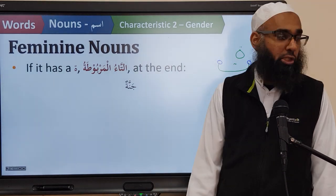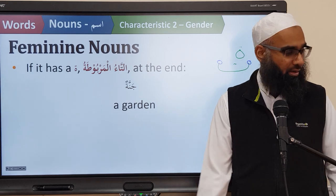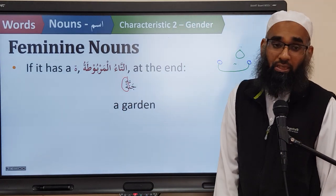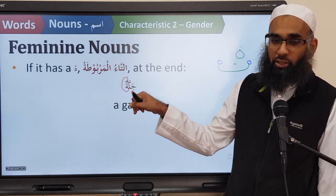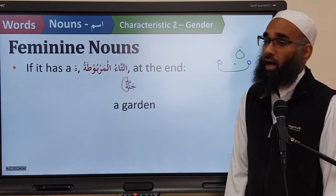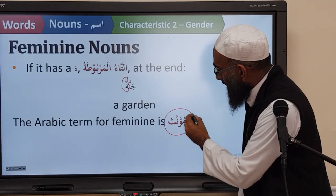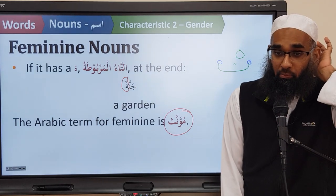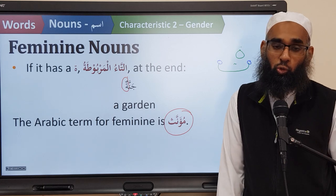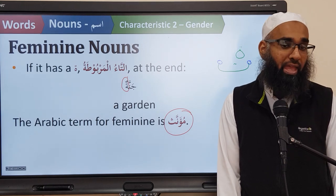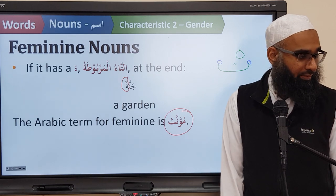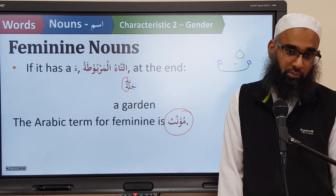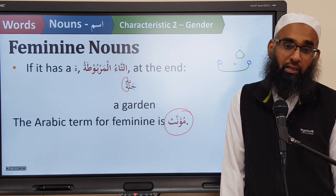For example, jannatun — jannatun means garden, or heaven, because heavens are gardens. That's called janna. What does it have at the end? A round ta. So that ta'ul marbuta is a sign that this word is feminine. And in Arabic, a feminine word is called mu'annath. So there are two rules for feminine: it has ta'ul marbuta at the end, or it's a real-life feminine.